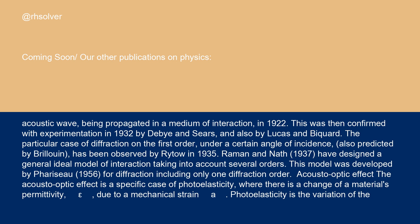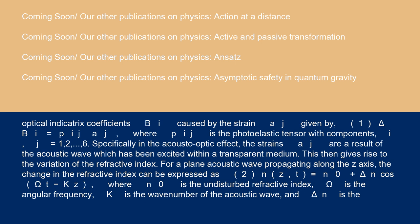Acousto-optic effect: The acousto-optic effect is a specific case of photoelasticity, where there is a change of a material's permittivity, epsilon, due to a mechanical strain A. Photoelasticity is the variation of the optical indicatrix coefficients BI caused by the strain AJ, given by Equation 1: ΔBI = PIJ AJ, where PIJ is the photoelastic tensor with components I, J = 1, 2, 6.